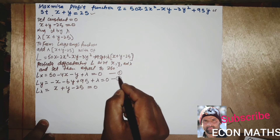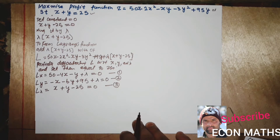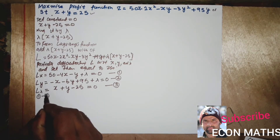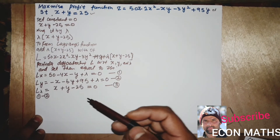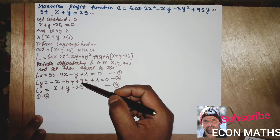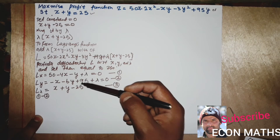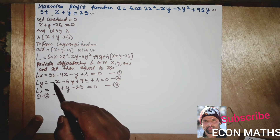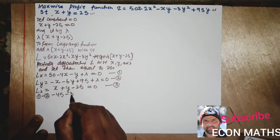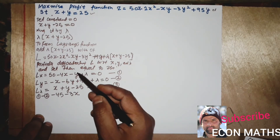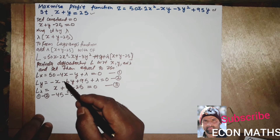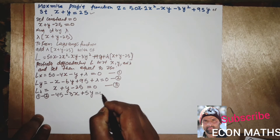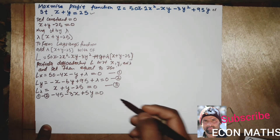We will solve these three equations to get the values of x, y, and lambda. First, subtracting equation 2 from equation 1: (50 - 95) gives -45, (-4x + x) gives -3x, and (-y - (-6y)) gives +5y. So equation 1 minus equation 2 gives: -45 - 3x + 5y = 0. Let this be equation 4.